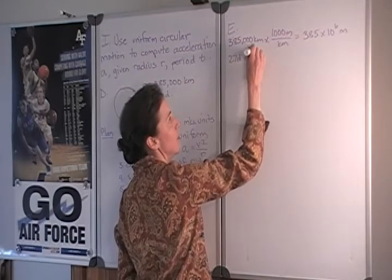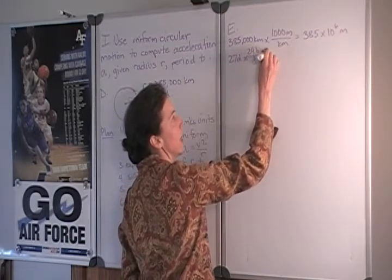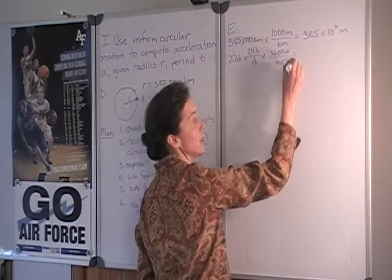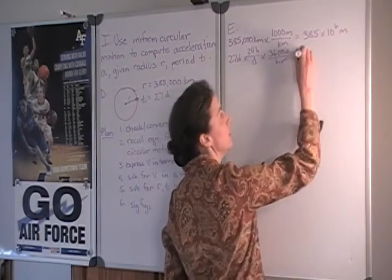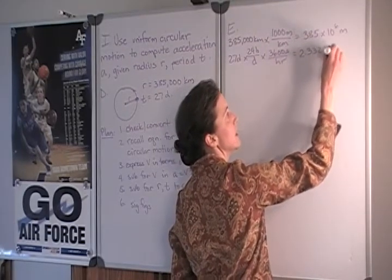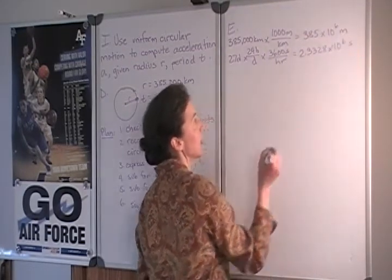Similarly 27 days converts to we have 24 hours in a day and 3,600 seconds in an hour this also yields a large number that we will express as 2.3328 times 10 to the sixth seconds.